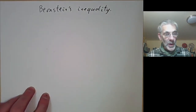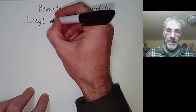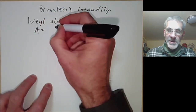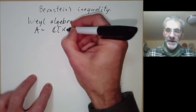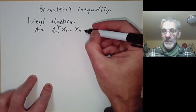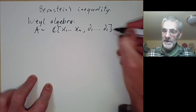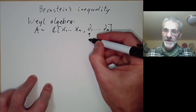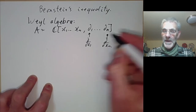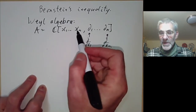This is an inequality involving modules over the Weyl algebra. The Weyl algebra A is just the ring of polynomials over the complex numbers in variables x₁ up to xₙ — so we've got a polynomial ring — but then we also introduce the partial derivatives ∂/∂x₁ up to ∂/∂xₙ. So this can be thought of as the ring of differential operators with polynomial coefficients.